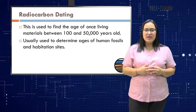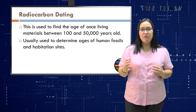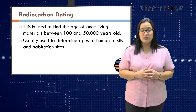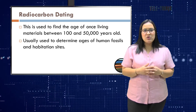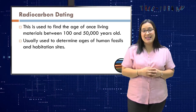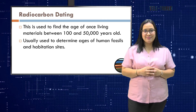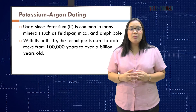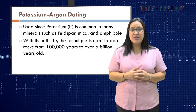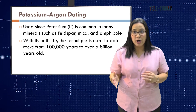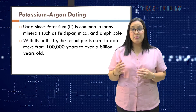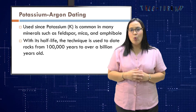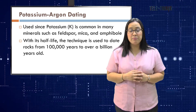Radiocarbon dating is used to find the age of once-living materials between 100 and 50,000 years old. Usually, it is used to determine the ages of human fossils and habitation sites. Potassium-argon dating is used since potassium is common in many minerals such as feldspar, mica, and amphibolite. With its half-life, the technique is used to date rocks from 100 years to over a billion years old.